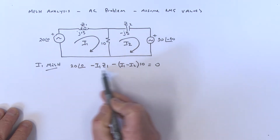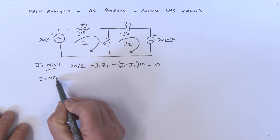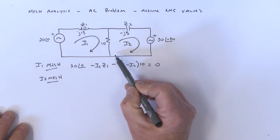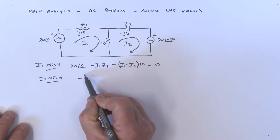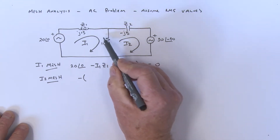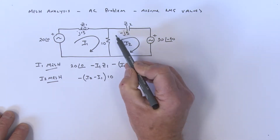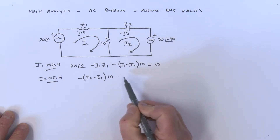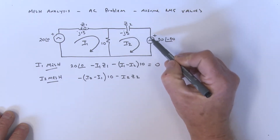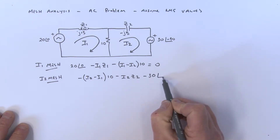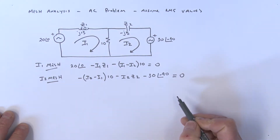There's our first mesh I1 equation. Now let's write the I2 mesh current equation. Starting here and going around: we have a minus bracket I2 minus I1 times 10, going in this direction, then a minus I2 times Z2, and then dropping here that is a minus 30 at an angle of minus 90, and all of that equals zero.